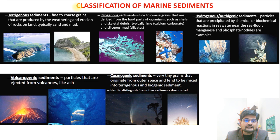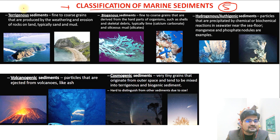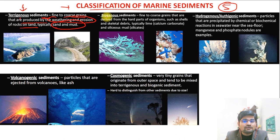The classification of marine sediments is largely into five types. First is terrigenous sediments — from terra meaning land — which are fine to coarse grains produced by weathering and erosion of land rocks, typically sand and mud. Second is biogenous sediments, which are biotic in nature containing organisms, their shells, and skeletal debris — calcium carbonate and mud silicates.